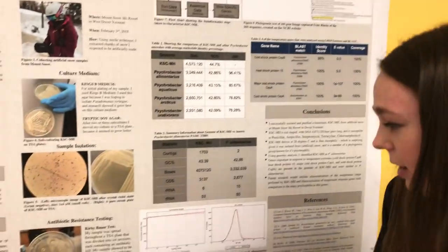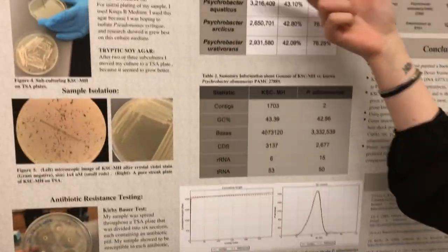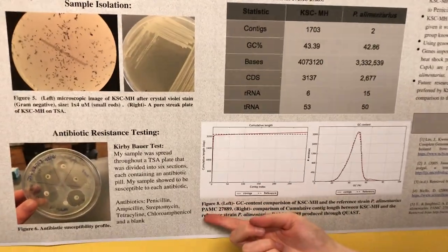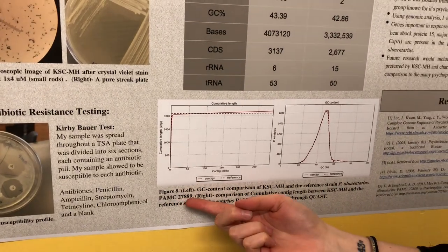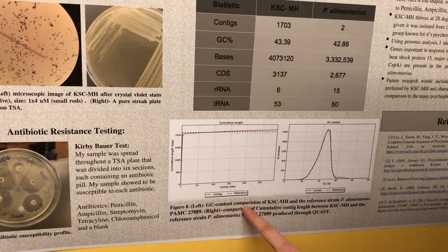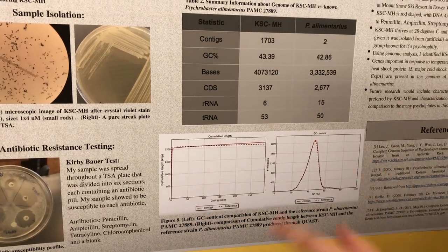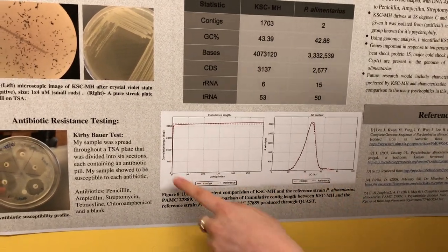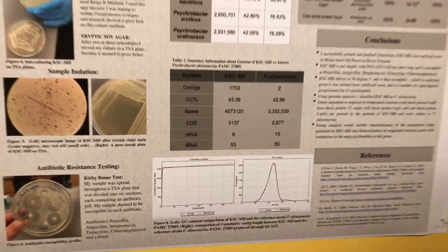I also compared it to the reference strain Psychrobacter elementarius PAMC27889. Here you can see the GC content comparison between the two and the cumulative contig length, and they are nearly identical.